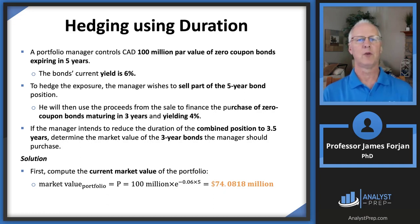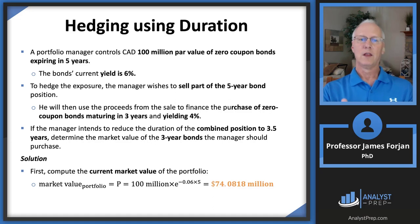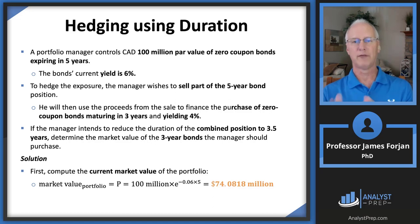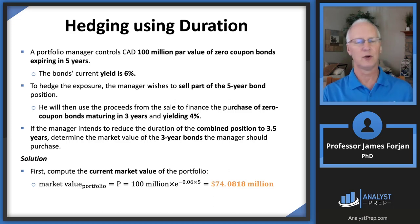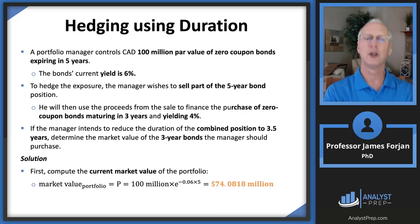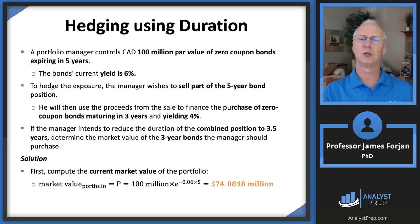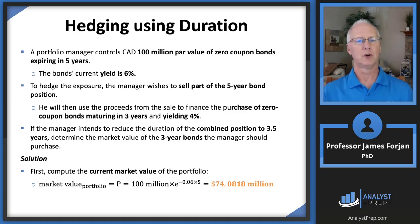We have a portfolio manager who controls $100 million Canadian dollar par value zero coupon bonds maturing in five years. The duration of a five-year zero coupon bond is five years. When a bond pays coupons, the investor can reinvest coupon payments, getting par value back earlier — so a coupon bond's duration is always less than its maturity. But for zero coupon bonds, duration and maturity are the same.